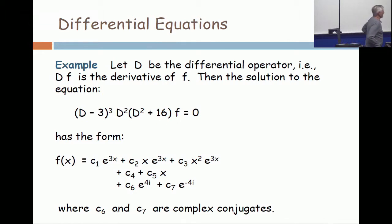And if you want to live in the real number system, you don't want any complex, the constants c6 and c7 have to be complex conjugates.